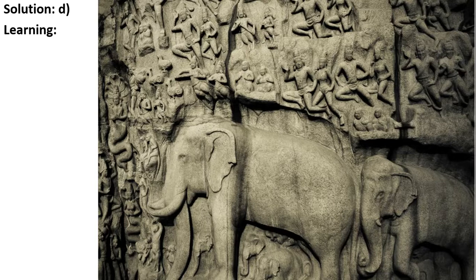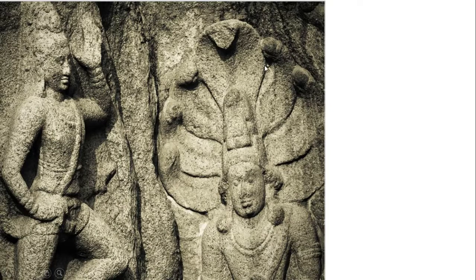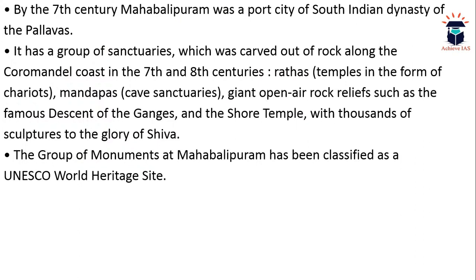You can find the serpents in the photograph, and you can search for birds by visiting Mahabalipuram if you have the time and resources. By the seventh century, Mahabalipuram was a port city of the South Indian Pallava dynasty. It has a group of monuments carved out of rock along the Coromandel Coast in the seventh and eighth centuries — Rathas, temples in the form of chariots, mandapas, and giant open rock reliefs such as the famous Descent of the Ganges and the Shore Temple, which have been classified as a UNESCO World Heritage Site.